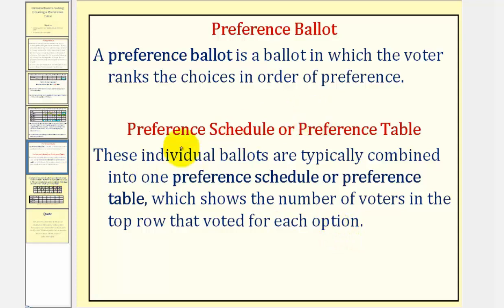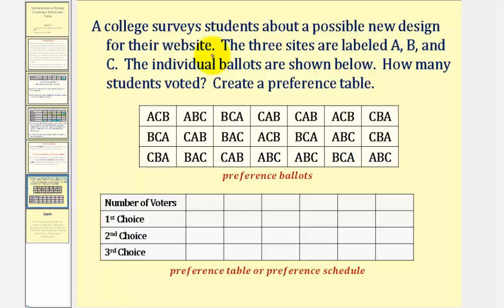Let's take a look at an example. A college surveys students about a possible new design for their website. The three sites are labeled A, B, and C, and the individual ballots are shown below. So these ballots here would be called the preference ballots. Notice how the ballots rank the choices from first through third.